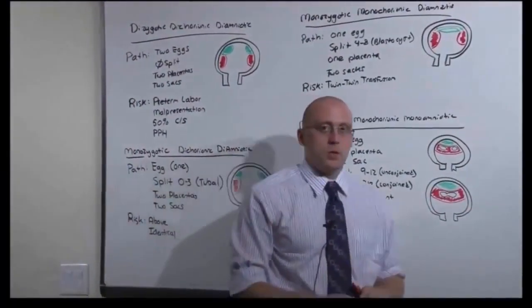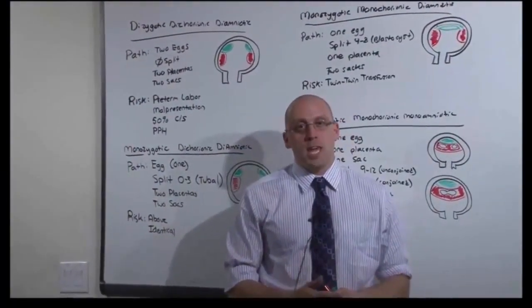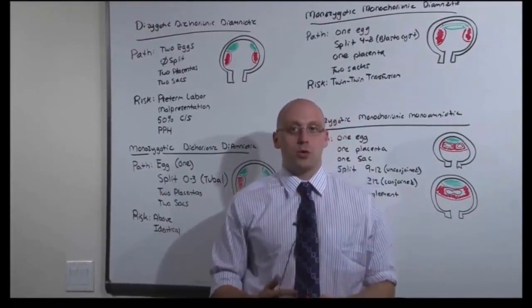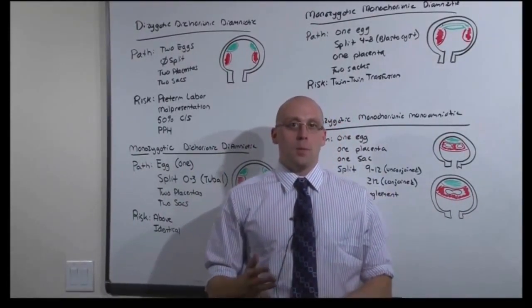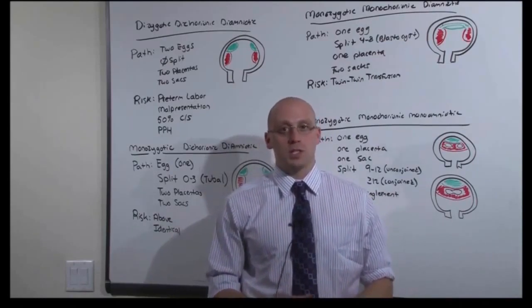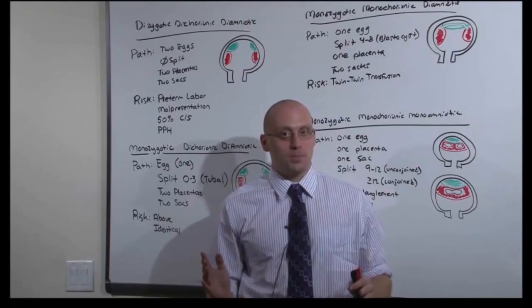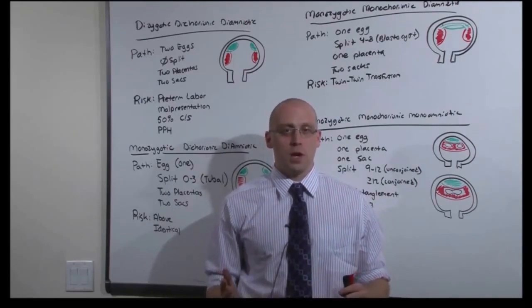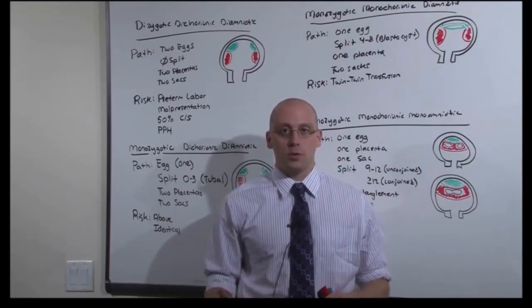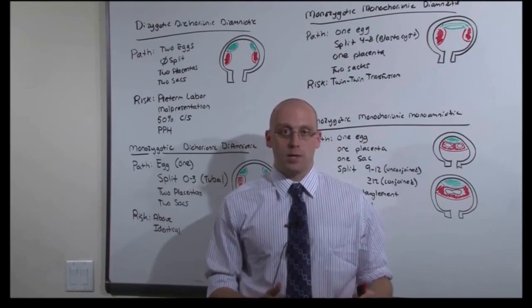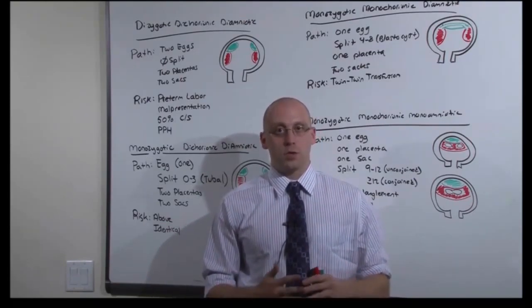So there is something else you need to know about twins, and that is you may diagnose a twin early on in a pregnancy. Vanishing twin syndrome occurs generally before 16 weeks. That is, you saw two gestations and one just vanished. You don't really know the pathophysiology of that, but that is normal. So twins may become a normal pregnancy by the end of the first trimester.